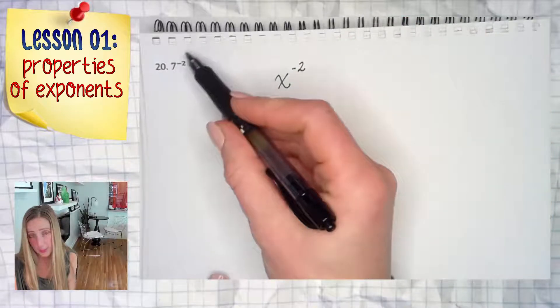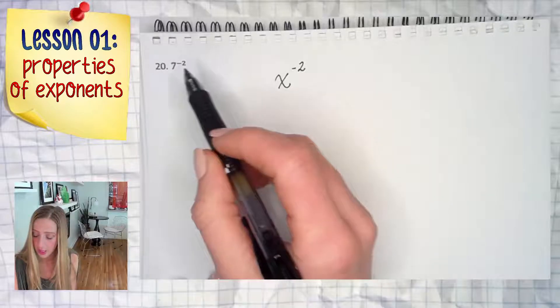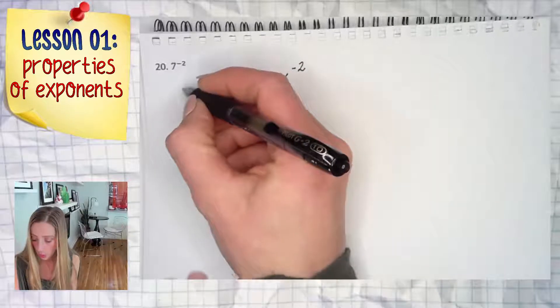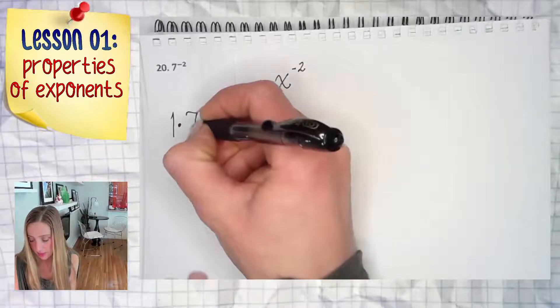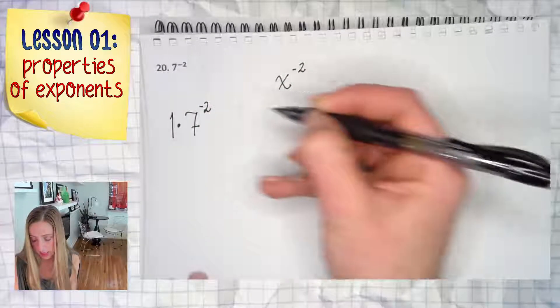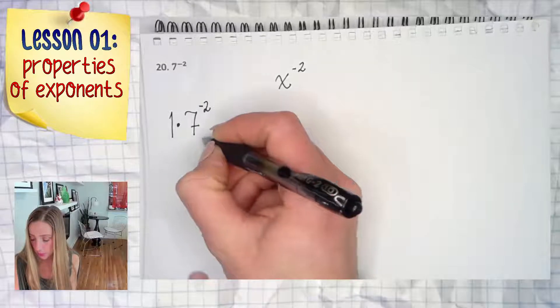So what would I recommend? I have a one invisible in front times seven which is to the negative second power. When we have a negative exponent that can relocate you.